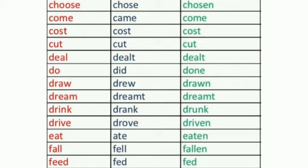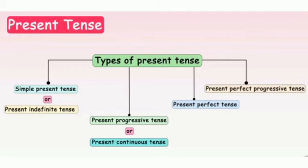More irregular verbs: eat / ate / eaten; fall / fell / fallen; feed / fed / fed. This concludes the irregular verb examples for past tense, present tense, and future tense.